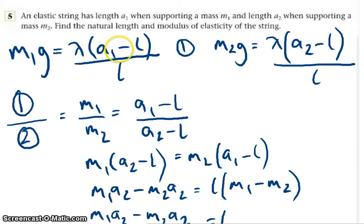So the change in length is the new length take away an original length or natural length. And that's just extension. So these two equations are the same, two masses, two different lengths.